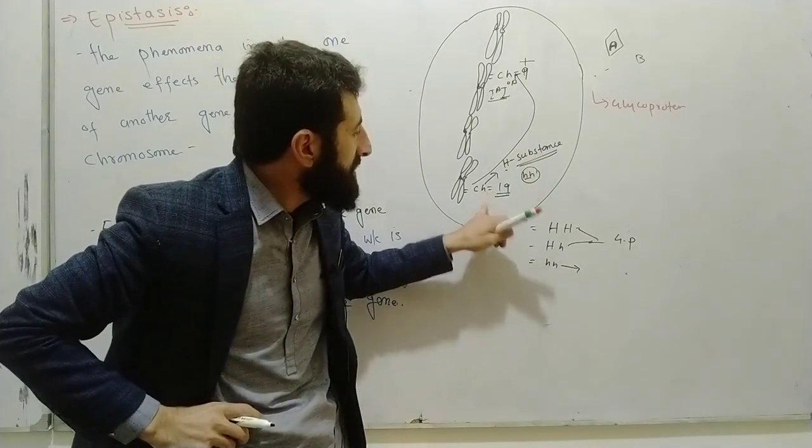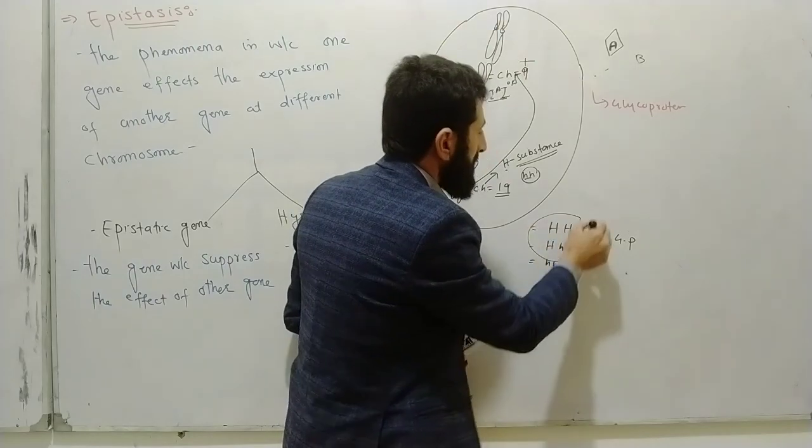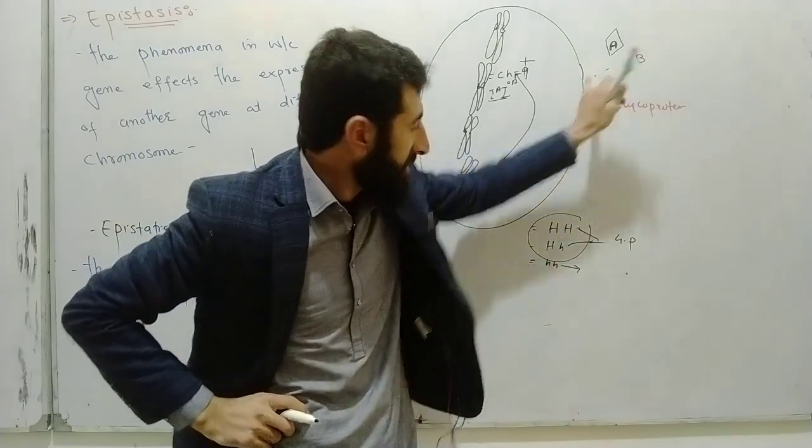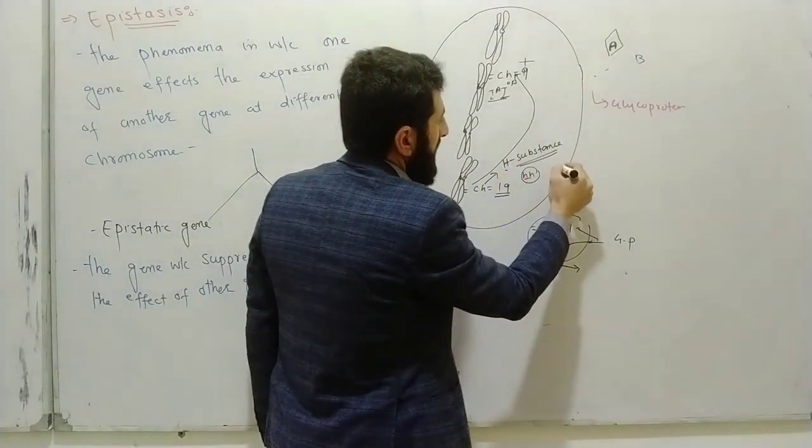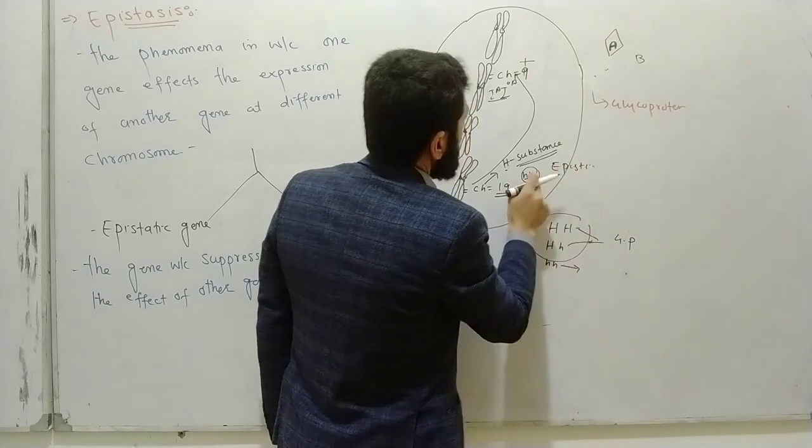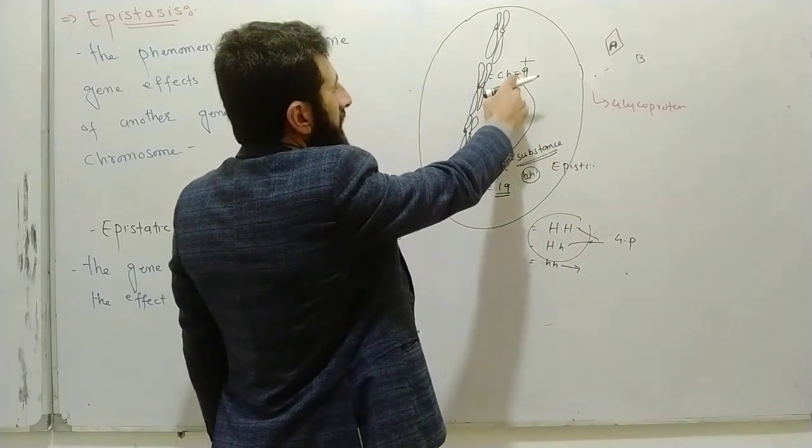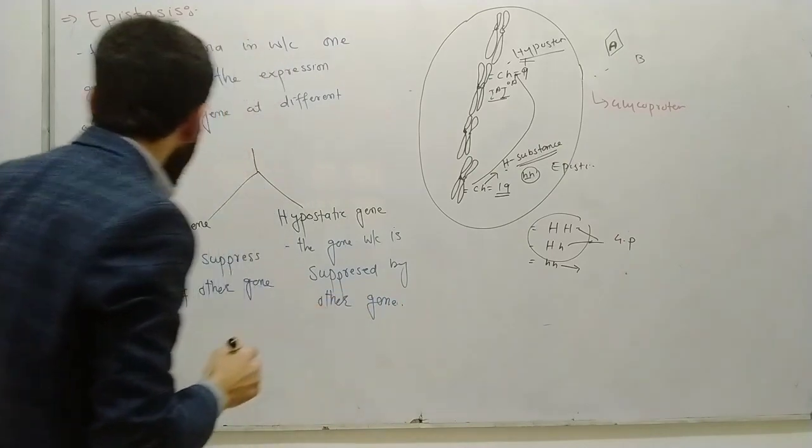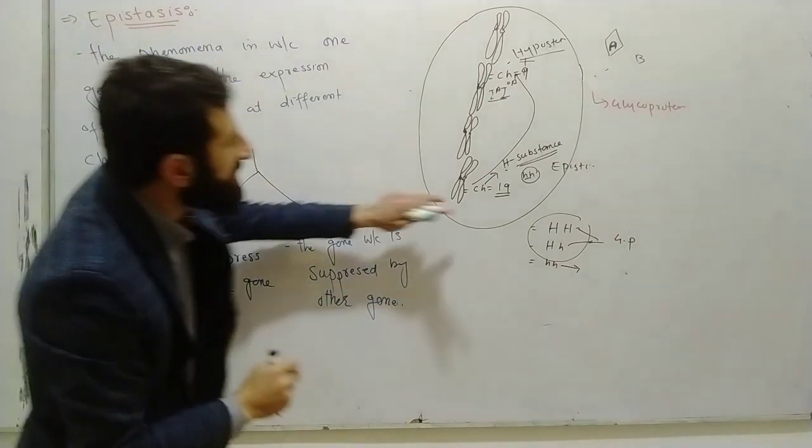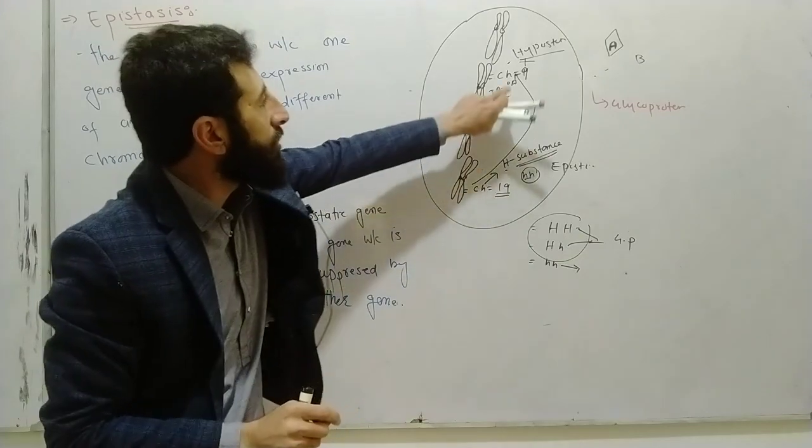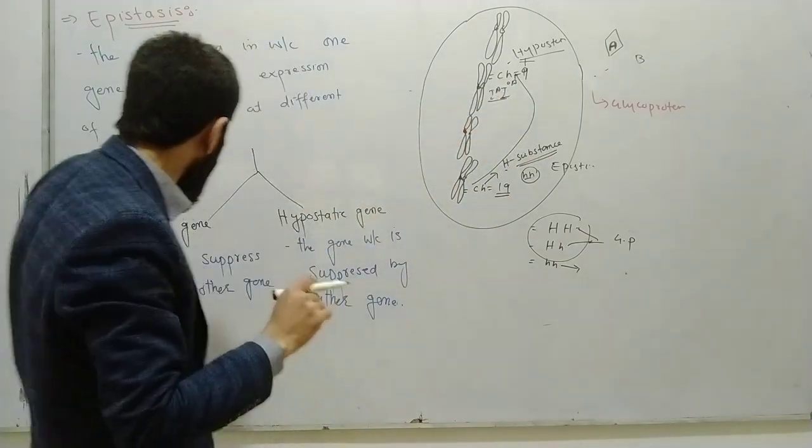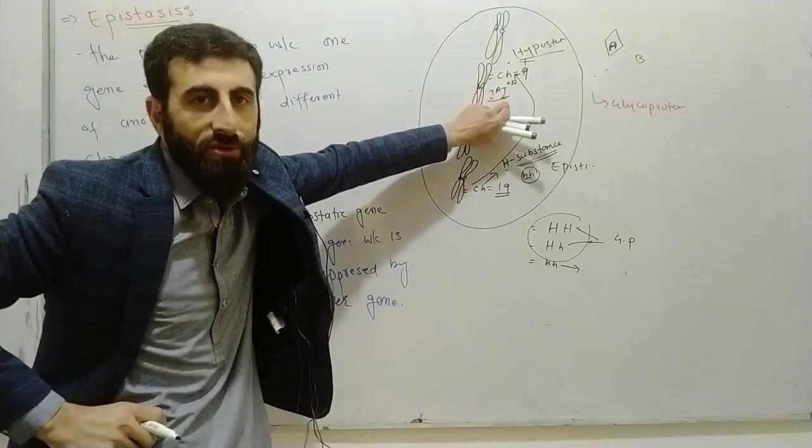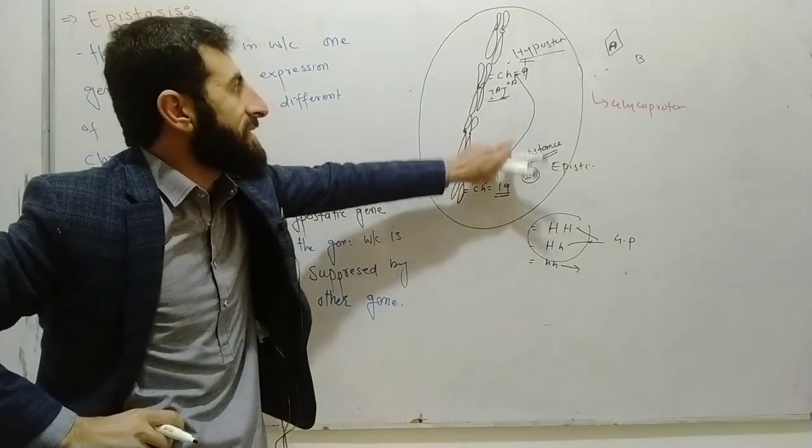If chromosome number 19 has small h small h, then even with capital I capital A on chromosome 9, the gene effect is cancelled. The gene on chromosome 19 is epistatic - it cancels out the other gene. The gene on chromosome 9 is hypostatic - its effect is suppressed. The epistatic gene suppresses the effect of other genes on different chromosomes.